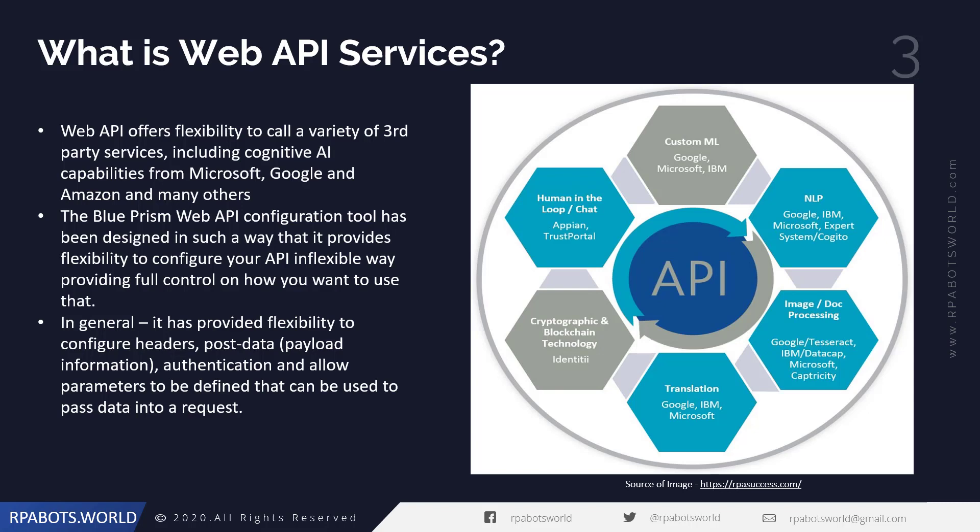For example, if you talk about cognitive AI capabilities, those provided by Microsoft, Google, Amazon, and many others can be used in Blue Prism using the API services. I'm not going to discuss what APIs are all about or what REST APIs are and how they work, because that's beyond the scope of this course. We're going to talk about how we can consume the APIs being provided by the different providers.